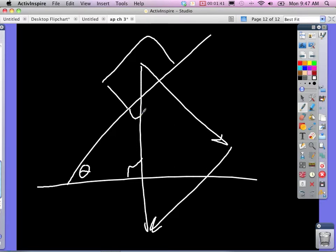These two lines are the complement of theta. So that must be theta. And then two angles are the complement of theta.